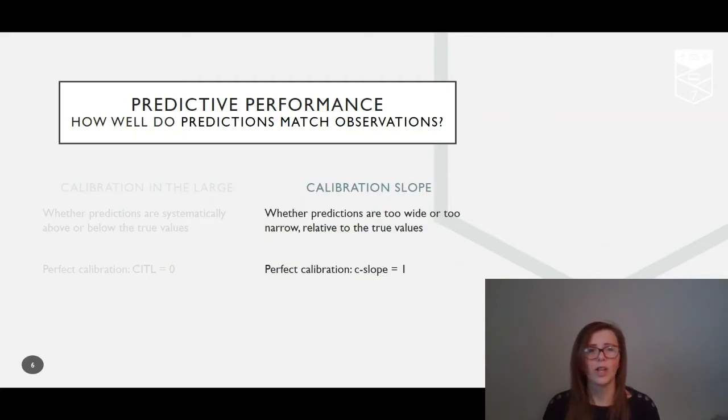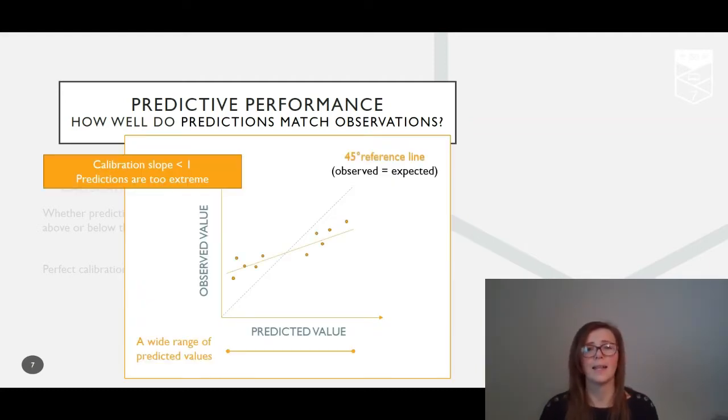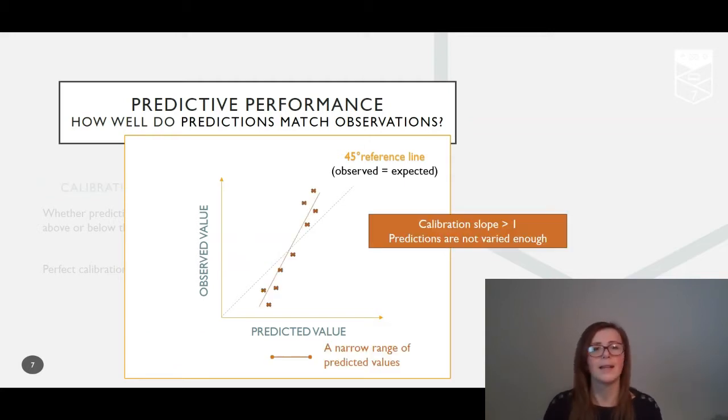The calibration slope indicates agreement between predicted and observed values across the full range of predicted values. Lower values of the C-slope can indicate a wide range of predicted values compared to a narrow range of the observed values, giving predictions towards the lower end that are too low with those at the higher end being too high. Overall, predictions are too extreme as a result of overfitting to the development data. Equally, a C-slope greater than 1 indicates a narrow range of predictions relative to the observed values, so predictions are not varied enough.